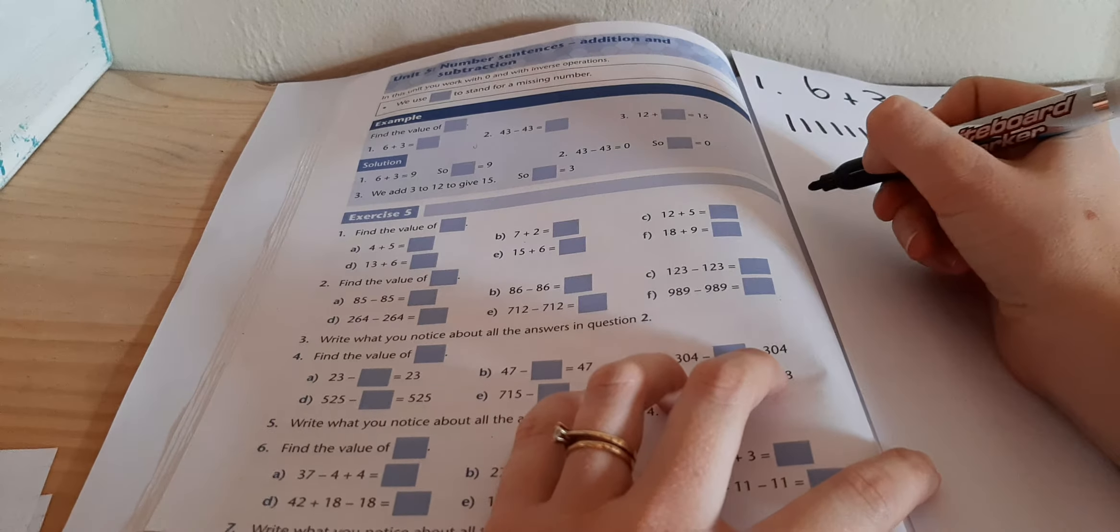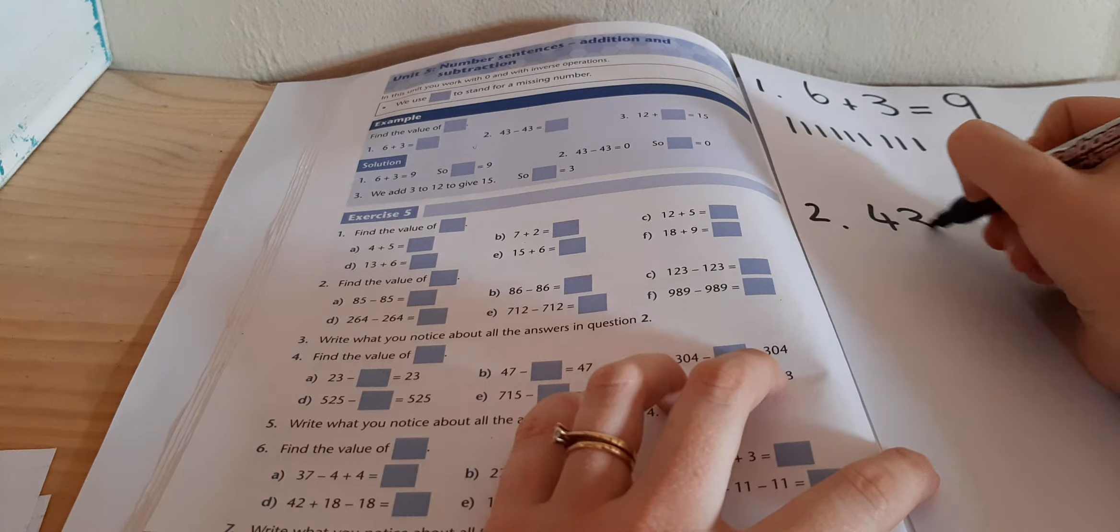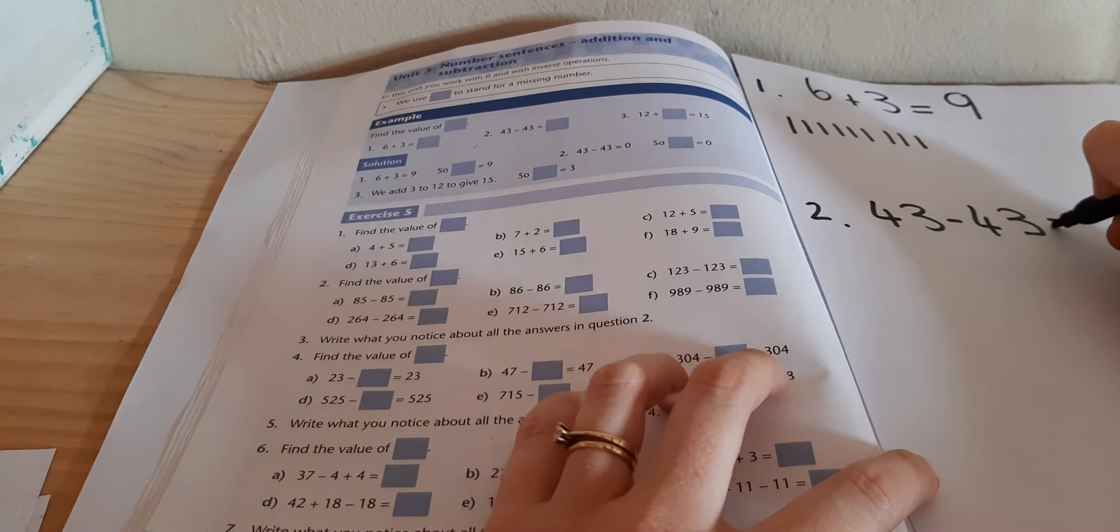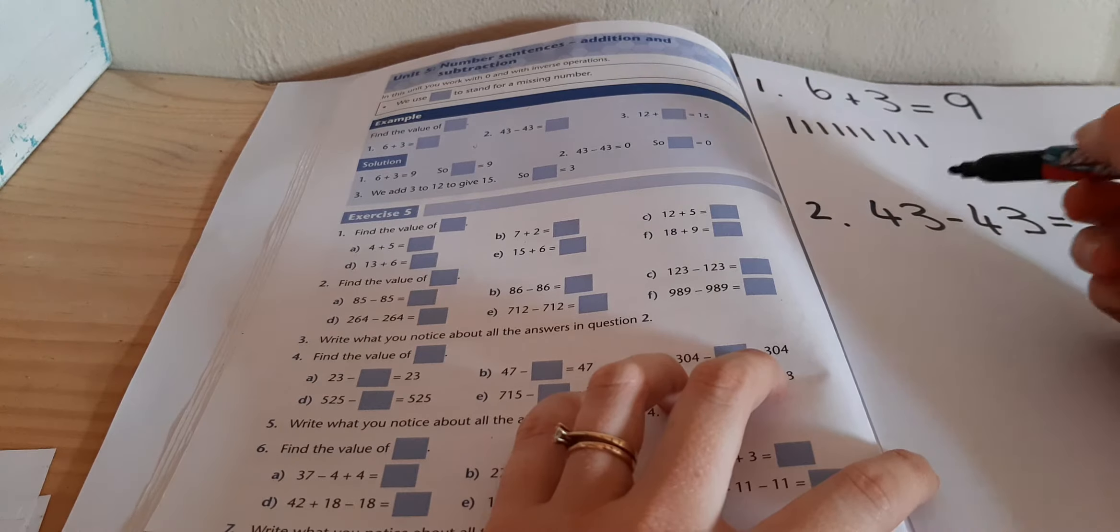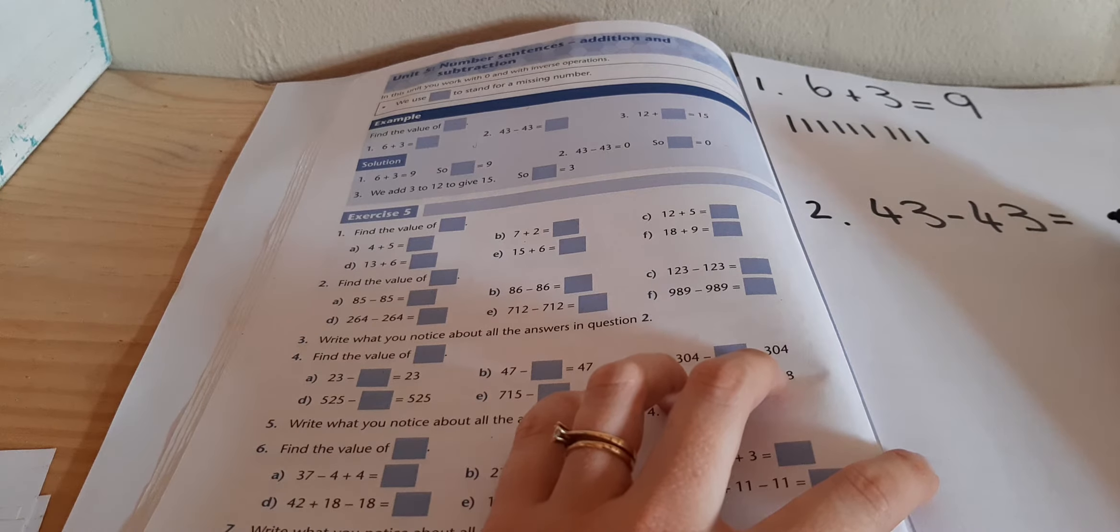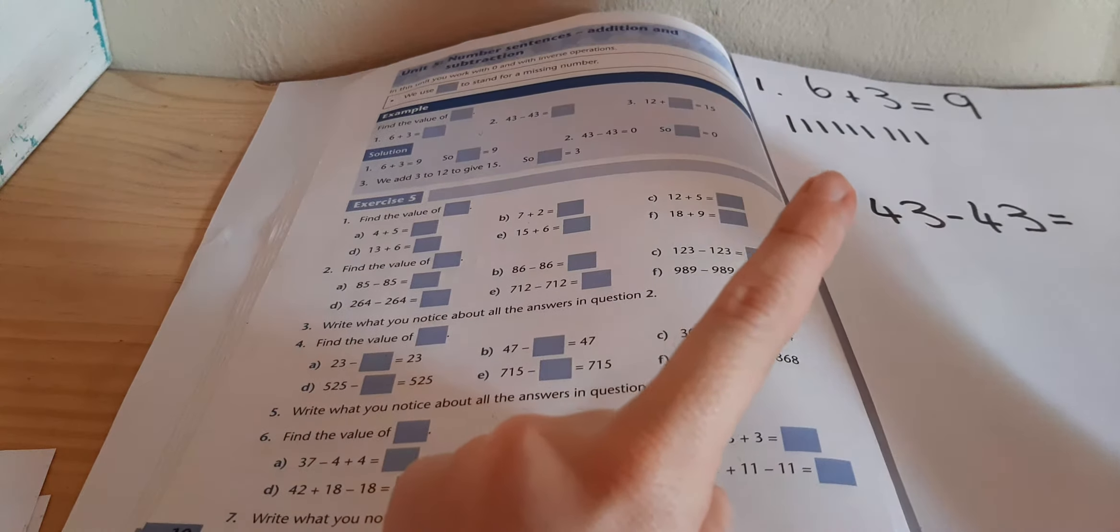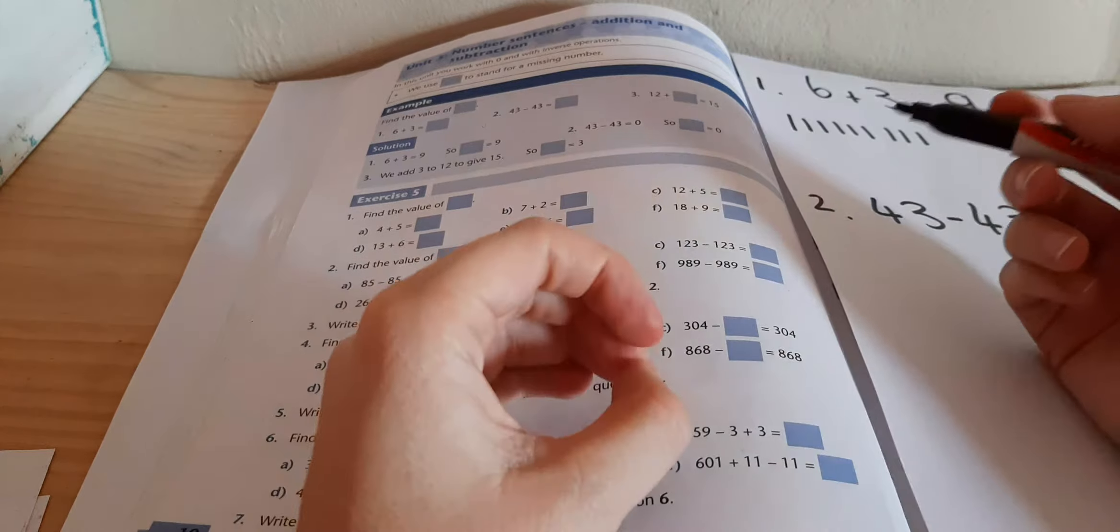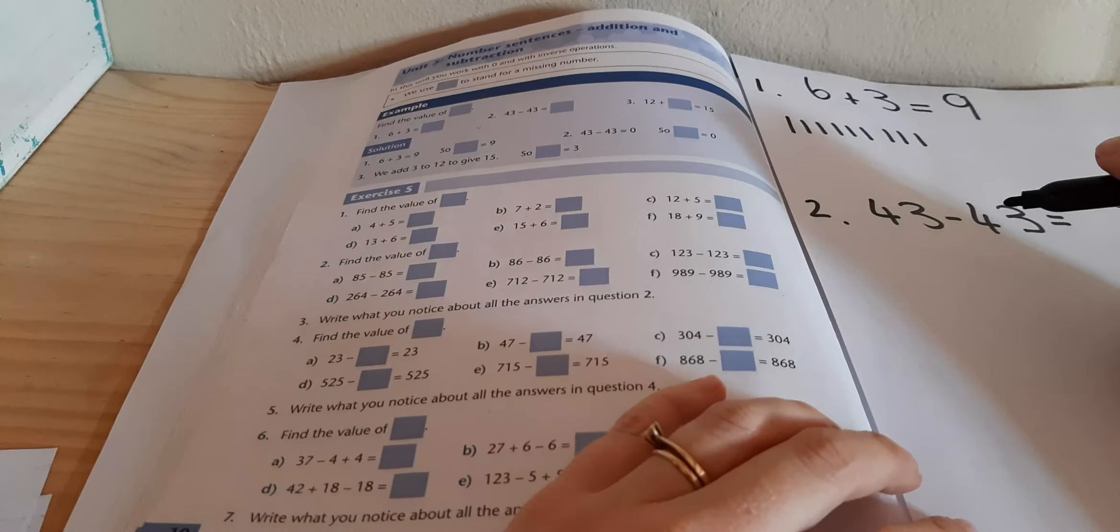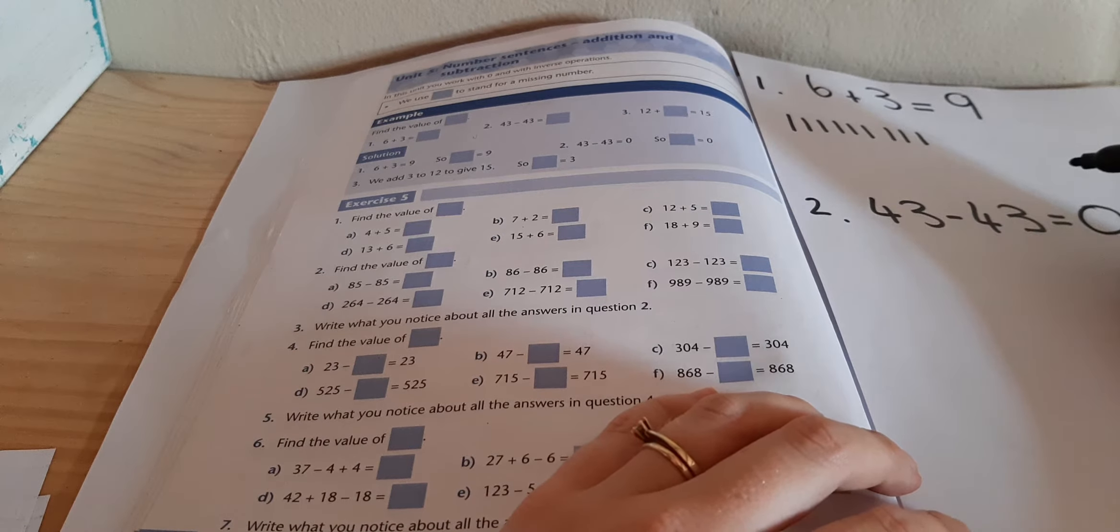If you have to do a subtraction one, so let's have a look at this one. You have got 43 minus 43. And you would write your answer on the right hand side. So if it has a blank, that means that you have to fill that blank in with something. Now, remember, if you have 1 and you take away that same number 1, you're left with zero. If you have 2 and you take away 2, you're left with zero. You've got 100 minus 100, your answer is zero.